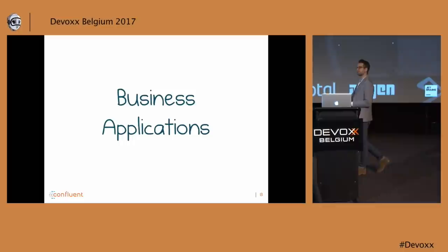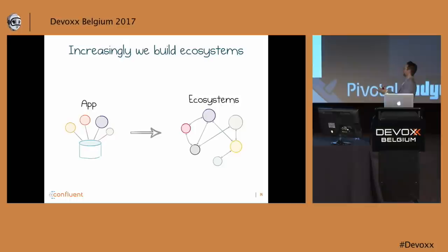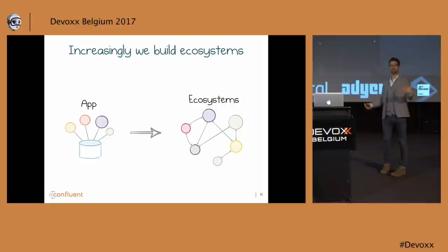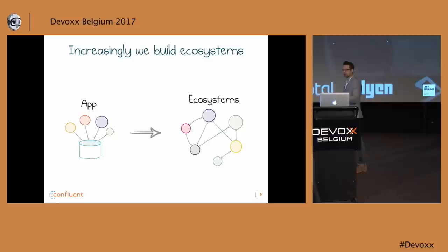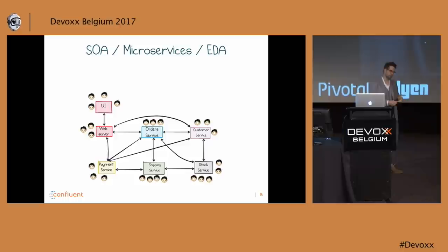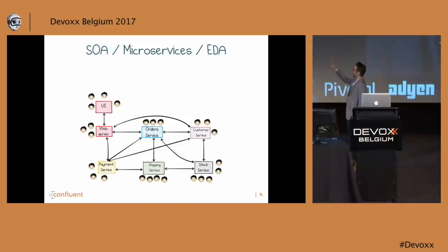What's this got to do with business applications? Increasingly today we tend to build ecosystems. Whether we're a startup starting with a single monolithic application or a big company with a load of applications already, we have to think about how we join those things together. Over the years there have been different patterns for doing this — microservices today, service-oriented architectures and event-driven architectures before. These are all slightly different patterns for working out how to join a set of independent processes together so that they further some common goal.